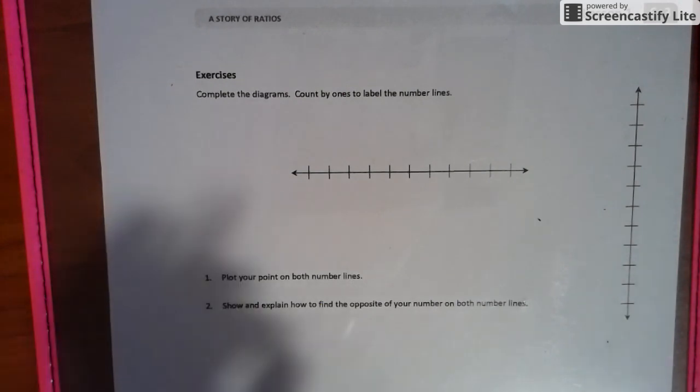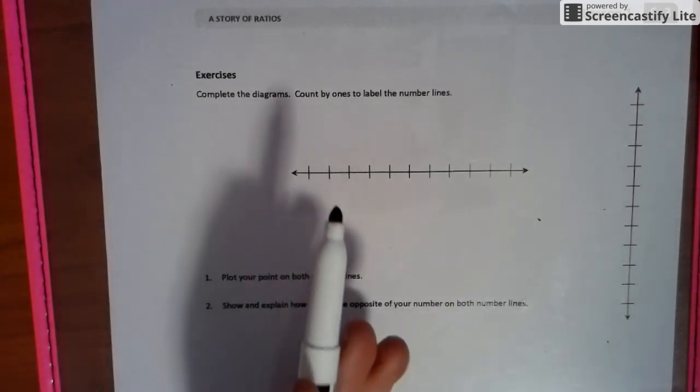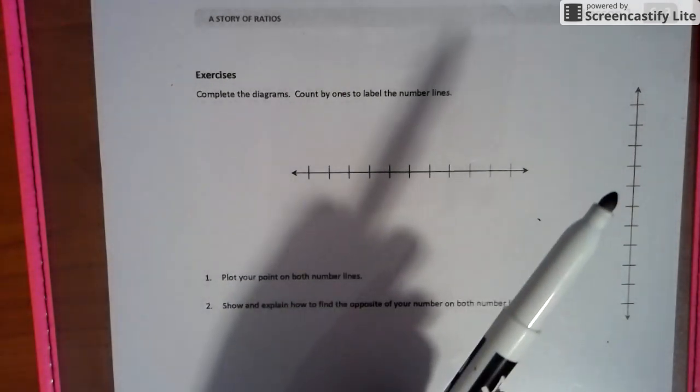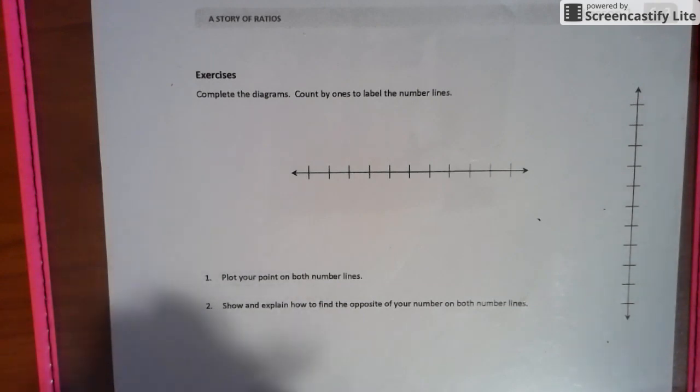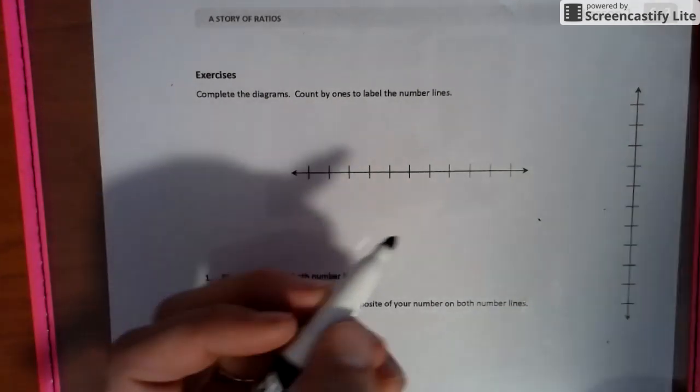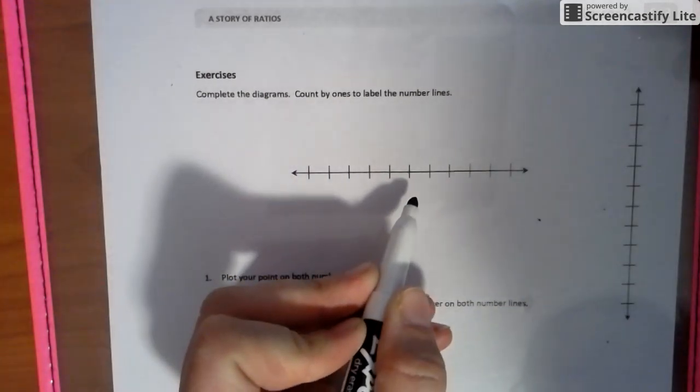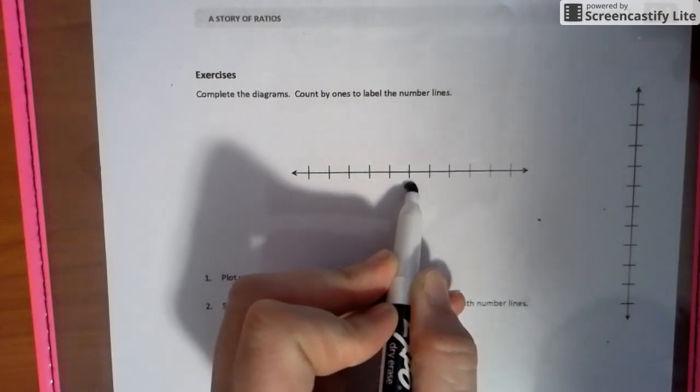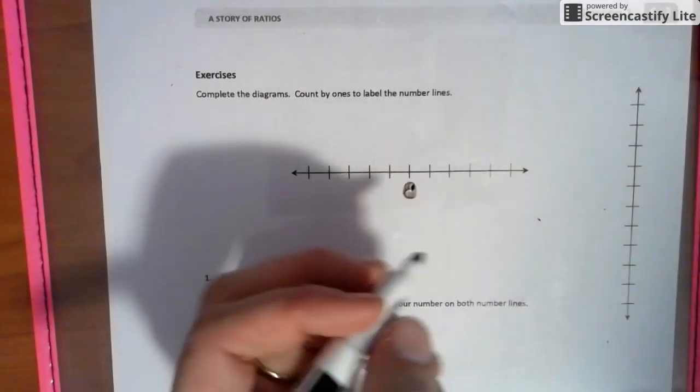So we're going to start right off with our horizontal number line. We also have a vertical number line. And what we're going to do is we're going to find zero. So we're going to find roughly the center, and we're going to call it zero. All right.